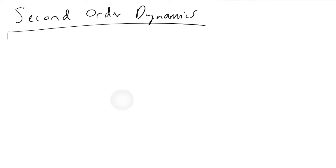What happens when we have two first-order transfer functions in series, or when we have an inherently second-order transfer function, such as a spring-damped system?